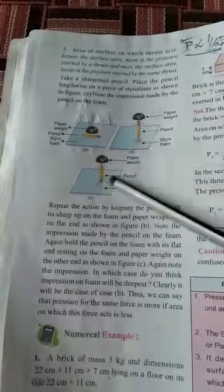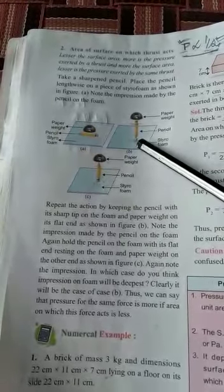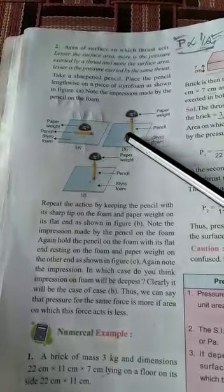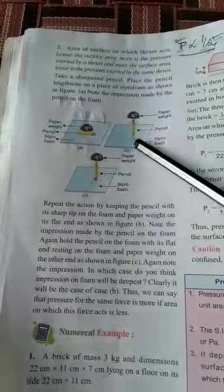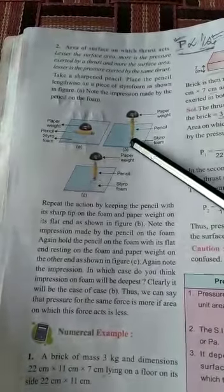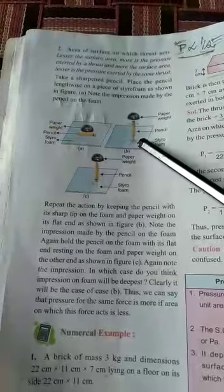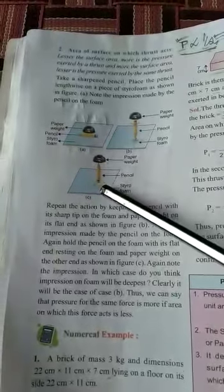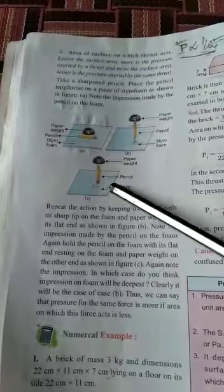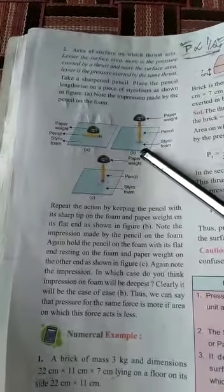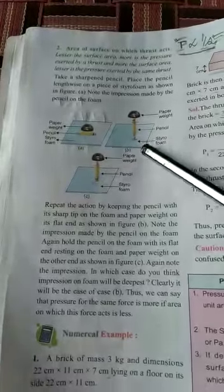In these two conditions, in the first condition, when pencil sharp and pointed end makes contact with styrofoam, it makes deeper impression in the styrofoam as comparison to the second condition. So, it proves that smaller the area, smaller the surface area, greater will be the pressure.